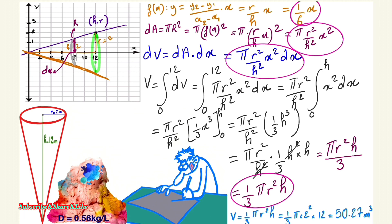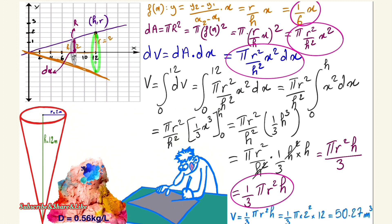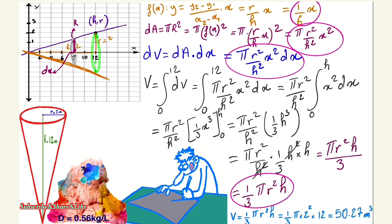And this approach works for any shape, not just a cone. The key is finding an equation whose rotated curve gives you the figure you're looking for, and then you can always find the volume.